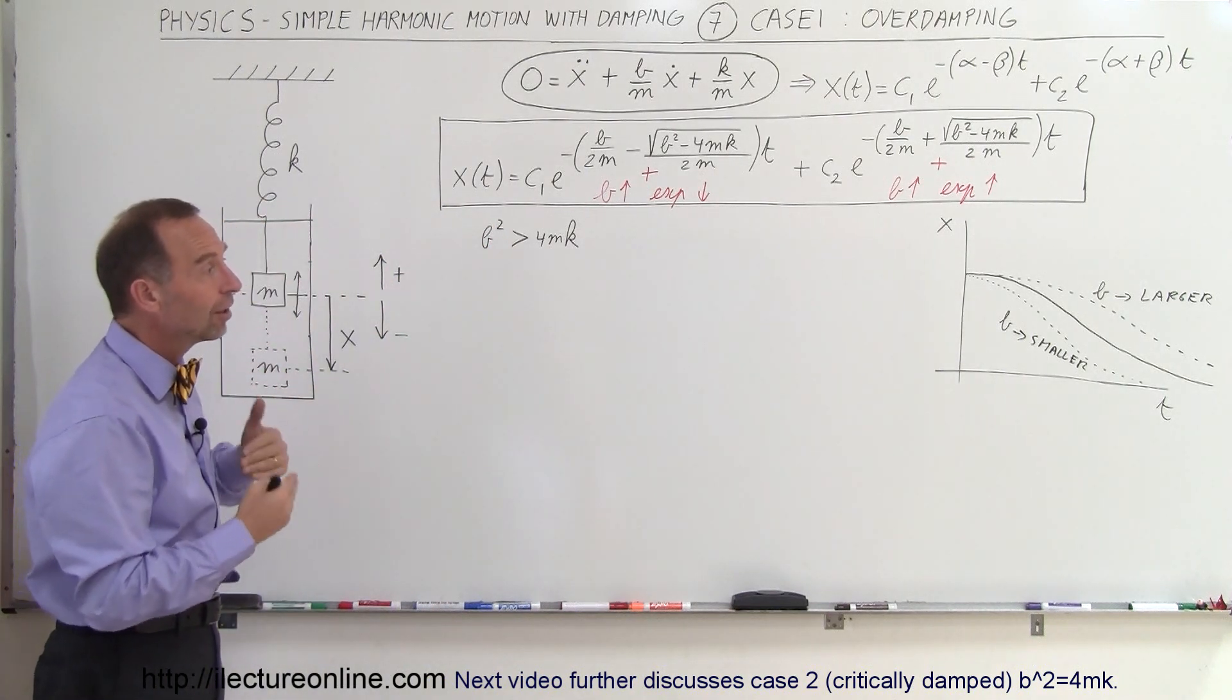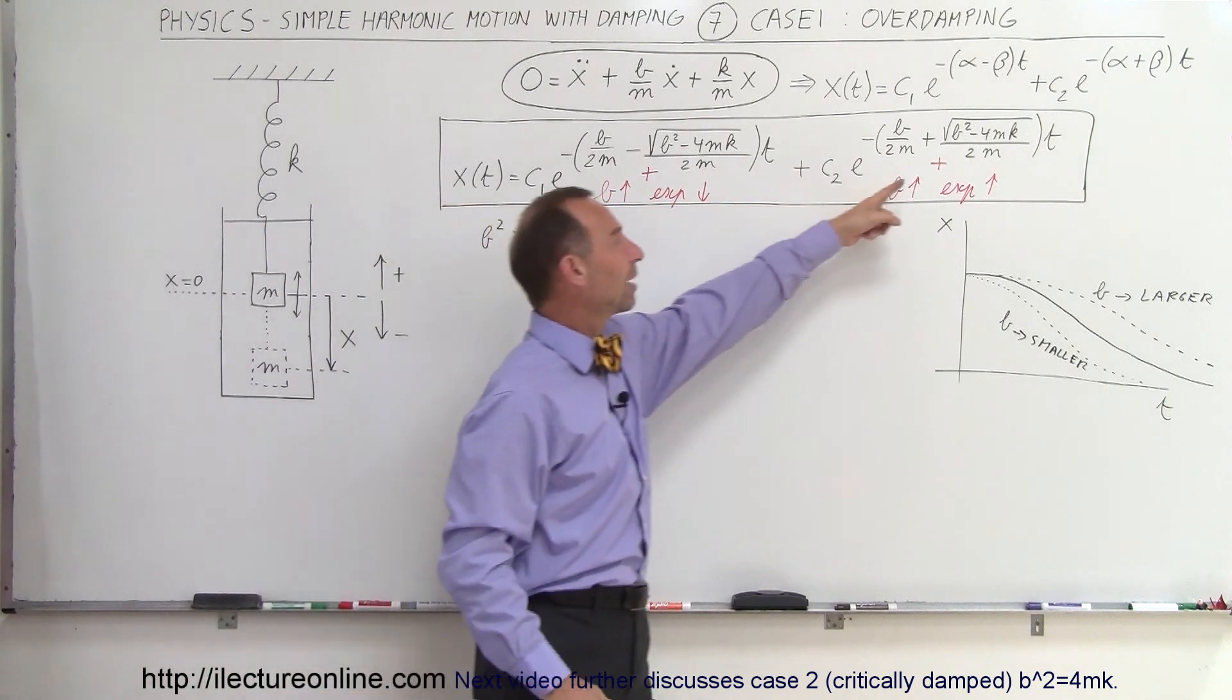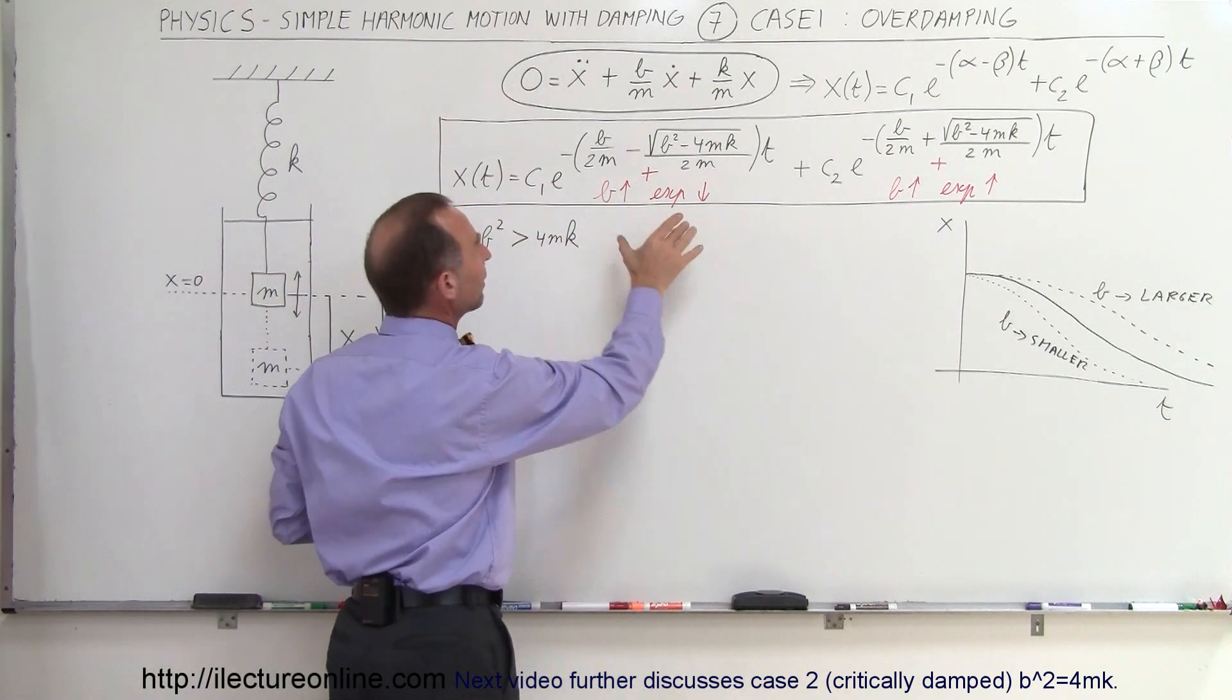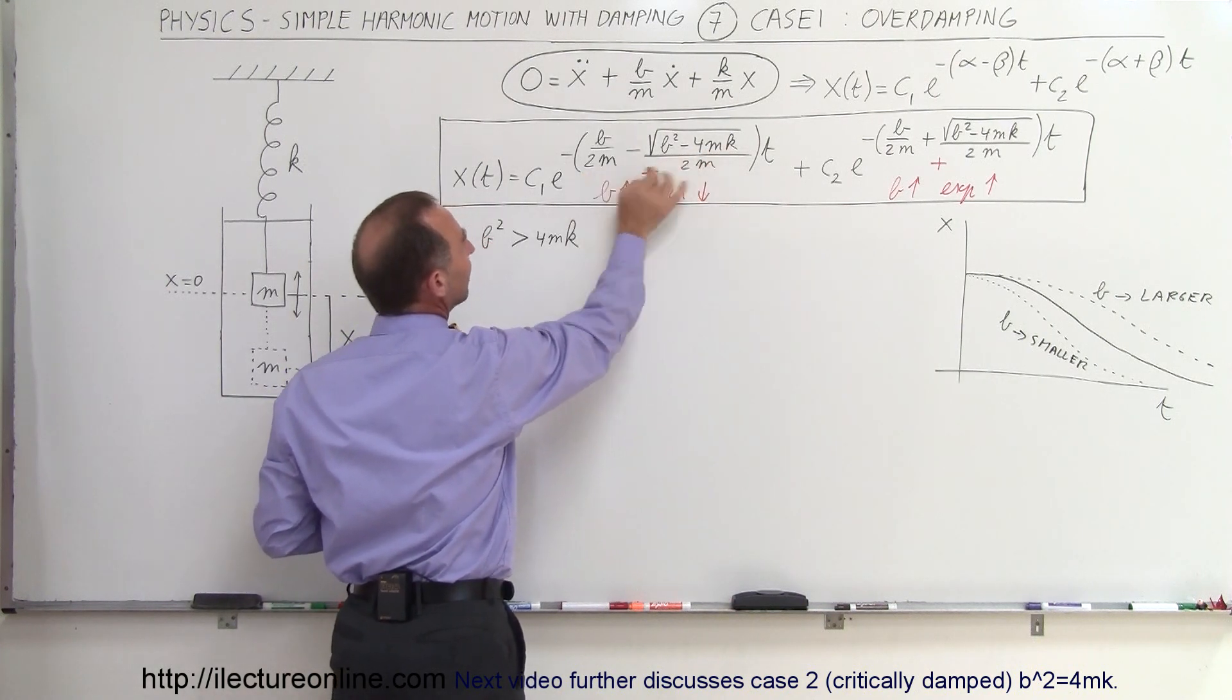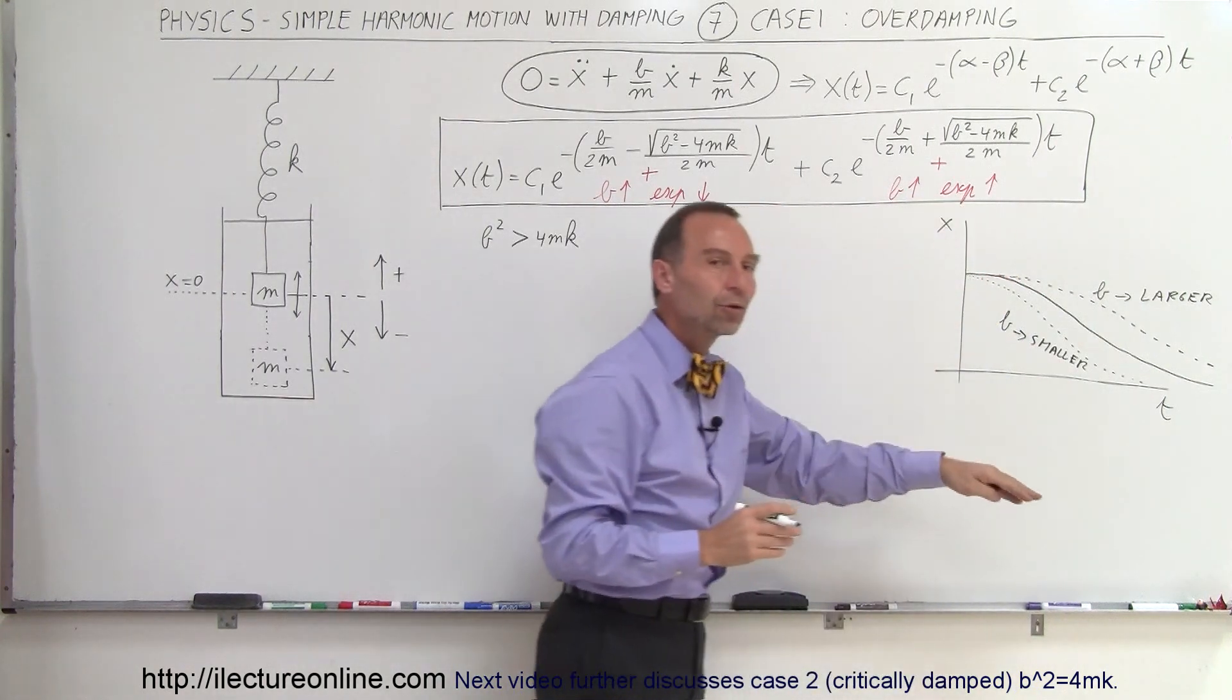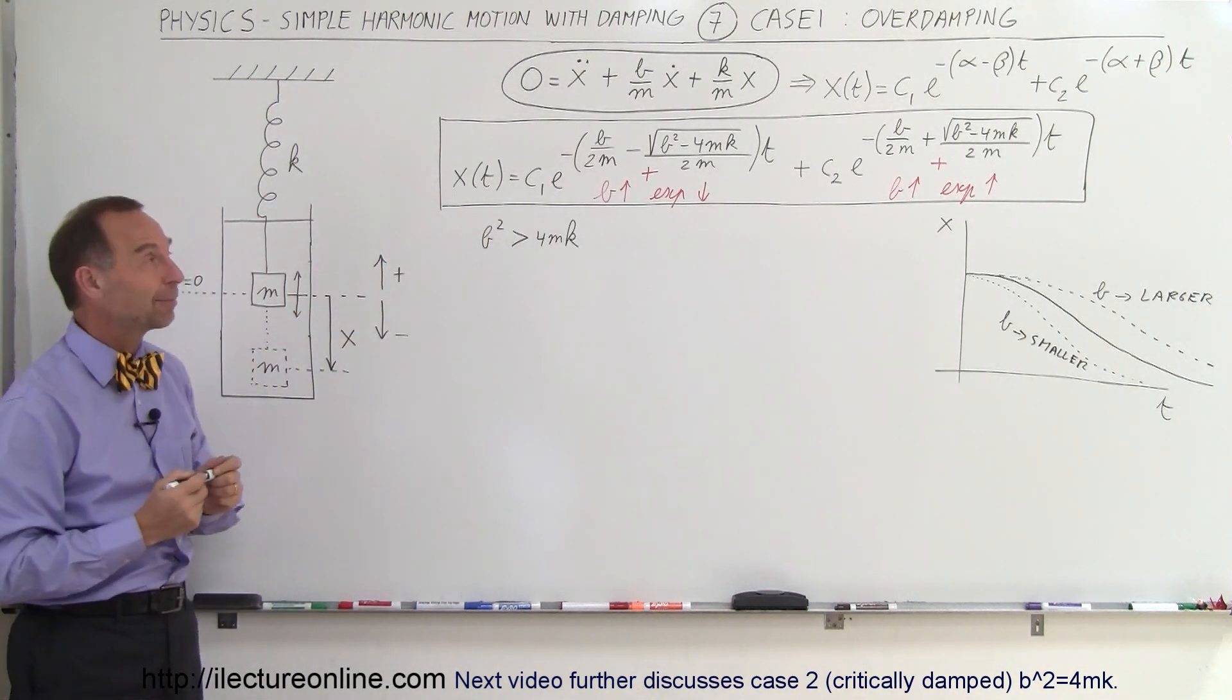So this is the first case, the overdamped case. And so depending upon how large B becomes, it'll take you a longer or shorter time to get to the equilibrium point. And that, of course, depends upon the size of these exponents. Notice that this exponent will hold back the mass going back to the equilibrium point because as B becomes very large compared to 4mk, then basically this exponent becomes zero. And so you'll have kind of a constant term. This constant term will just kind of hold back the return to the equilibrium point the larger B becomes. And that's due to the way that this exponent is set up. And that's how you look at overdamped cases.